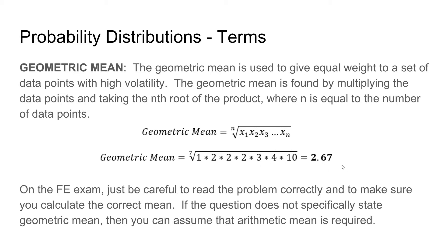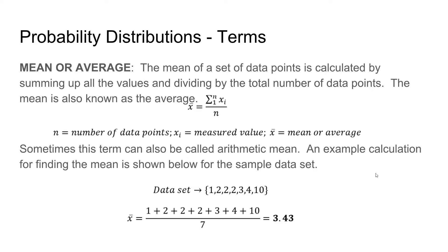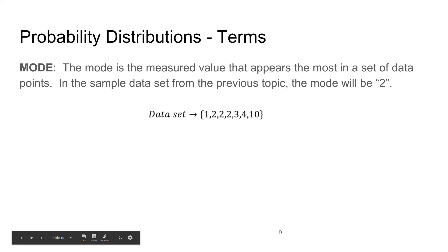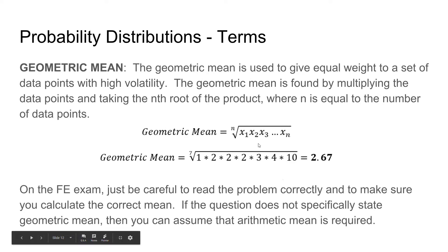Our arithmetic mean was 3.43 shown here. So what the geometric mean did was it made sure that the value 10 was not impacting the mean more than all the other values. It has less of an impact in this geometric mean as opposed to the arithmetic mean, where it brought up the average much higher compared to what the majority of the values are with 1, 2, 2, 2, 3, 4. On the FE exam, just be careful to read the problem correctly and make sure you calculate the correct mean. If the question does not specifically state geometric mean, then you can assume that arithmetic mean is what is required.